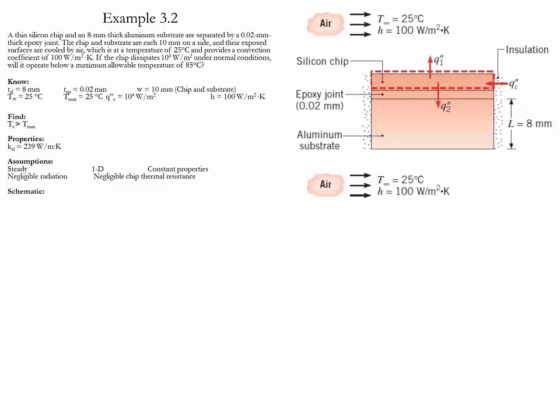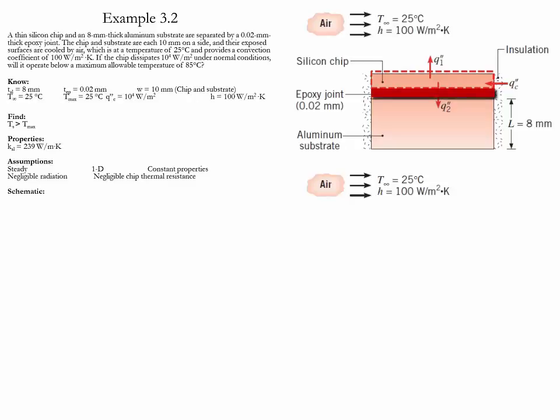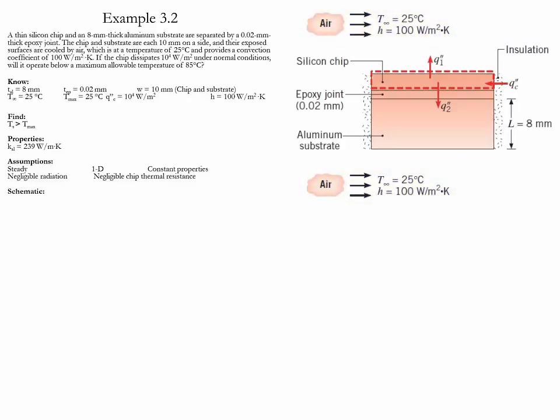Example 3.2. In this case, we have a thin silicon chip and an aluminum substrate, which are separated by an epoxy joint. The area of each substrate and chip are given. The upper part of the chip and the bottom part of the aluminum are exposed to air. The chip dissipates a certain heat flux and is only allowed to operate up to 85 Celsius. Our goal is to determine whether the temperature it reaches is higher or lower than that value.